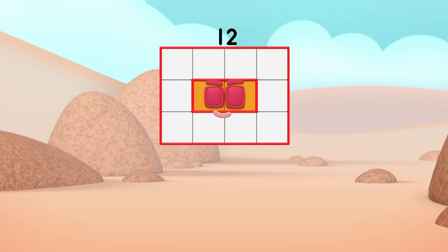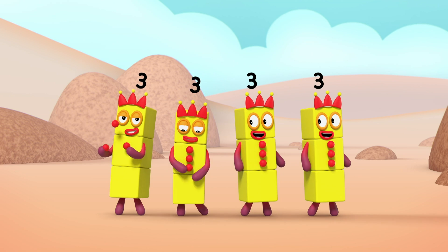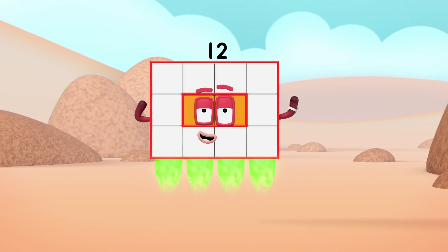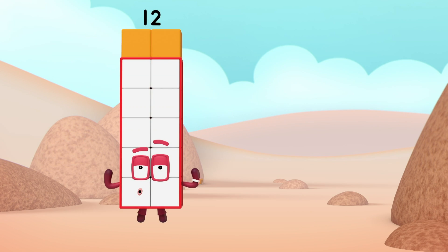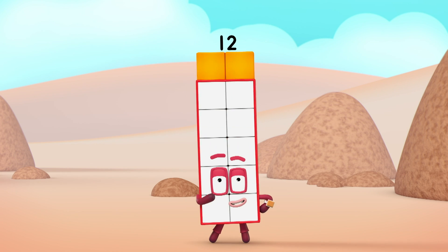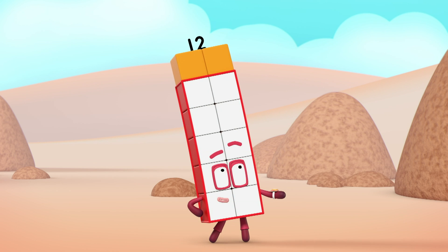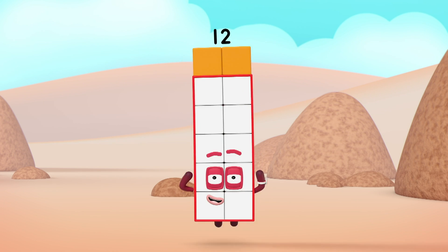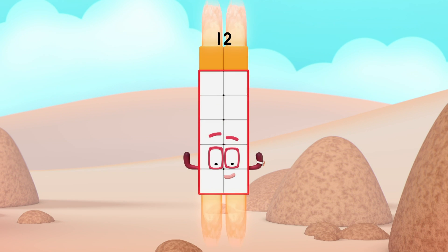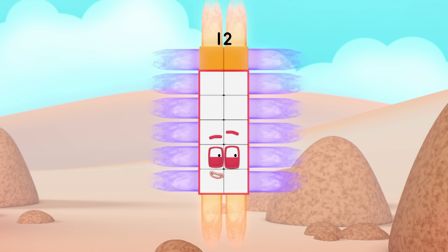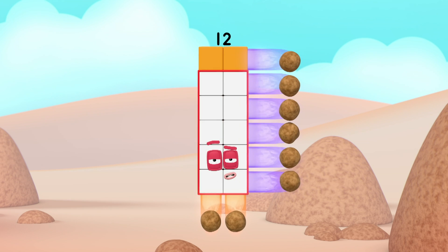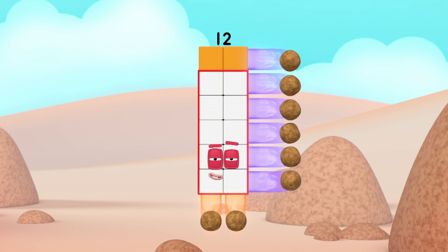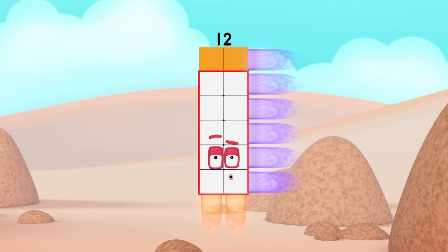Break away! Four three! Look at me! Two by six is another way! Two lots of six, do you hear what I say? Another rectangular array! So let's split, without delay!